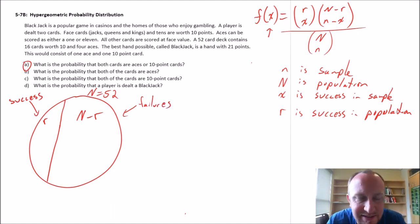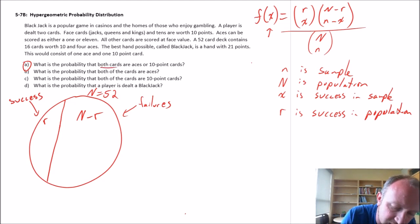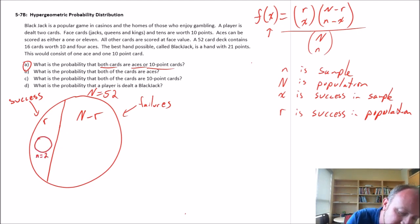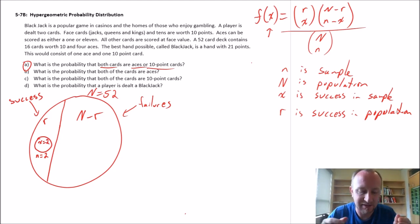I want to know the probability that both of my cards, so that means my entire sample, I have a sample of size N equals 2, that both of those cards fall into the success, which means that both of my cards in my sample are deemed a success, which means that X here, the number of successes in the sample, both of those are going to be successes.